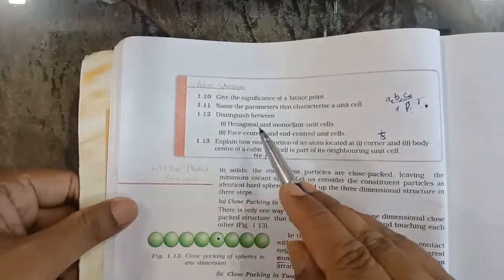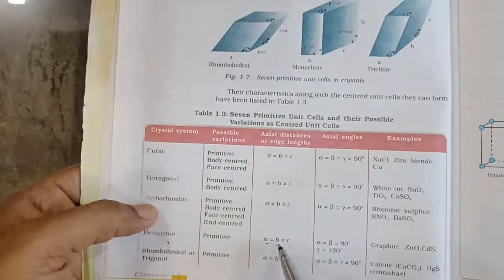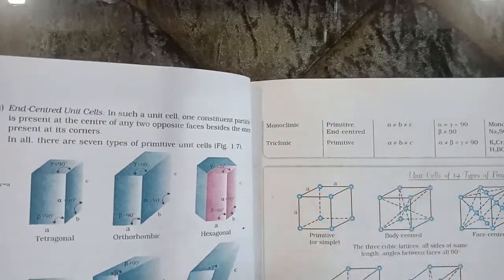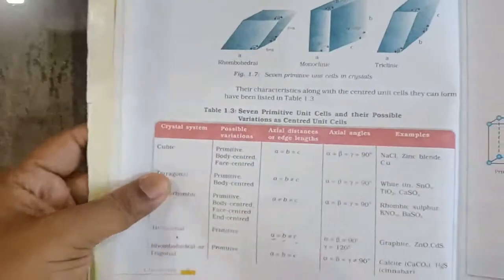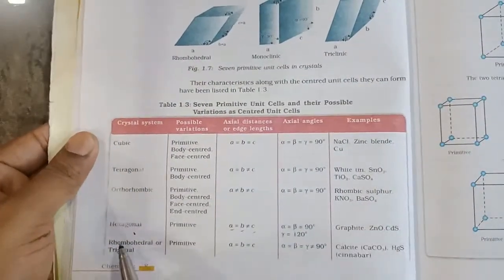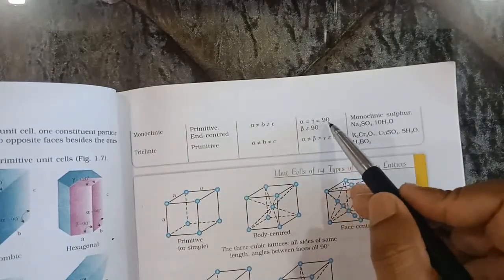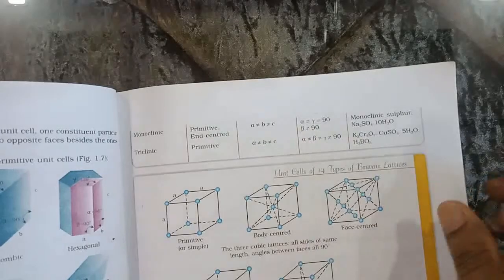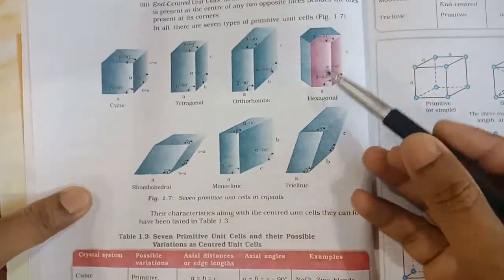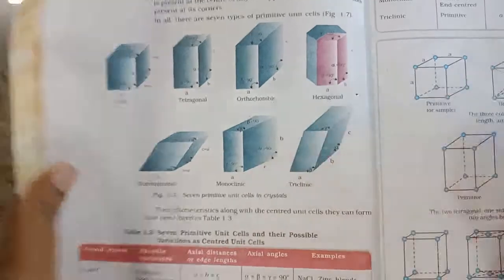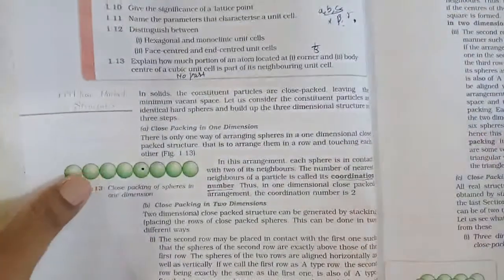Next — distinguish between hexagonal and monoclinic unit cell. In a hexagonal unit cell, edge length a = b but b ≠ c, whereas in monoclinic, a ≠ b and b ≠ c. For angles: in hexagonal, alpha = beta = 90° and gamma = 120°; in monoclinic, alpha = gamma = 90° and beta ≠ 90°. These differences are also clearly represented in the diagrams shown.